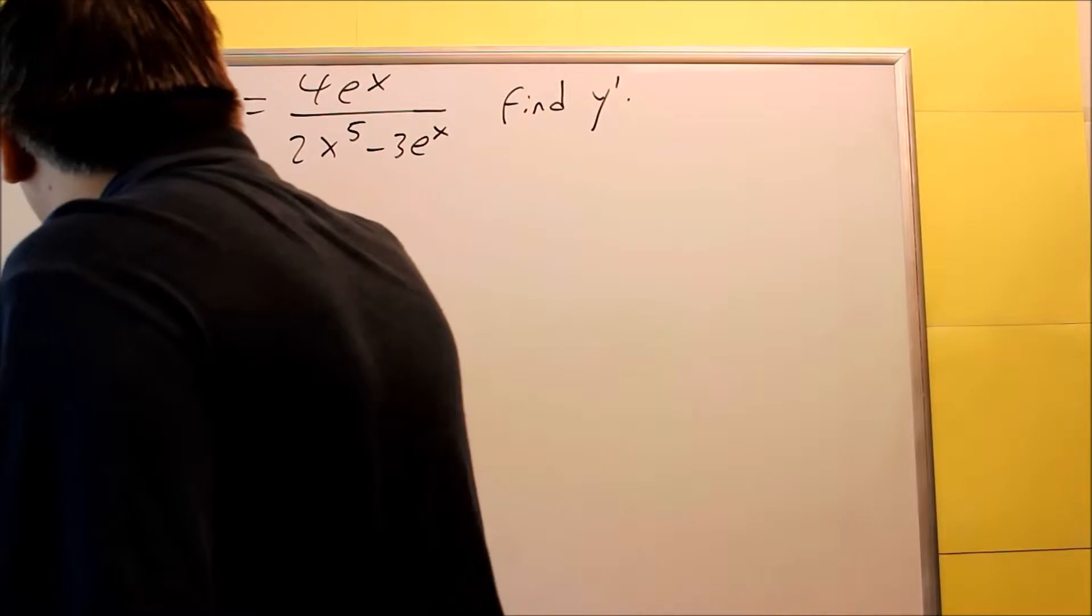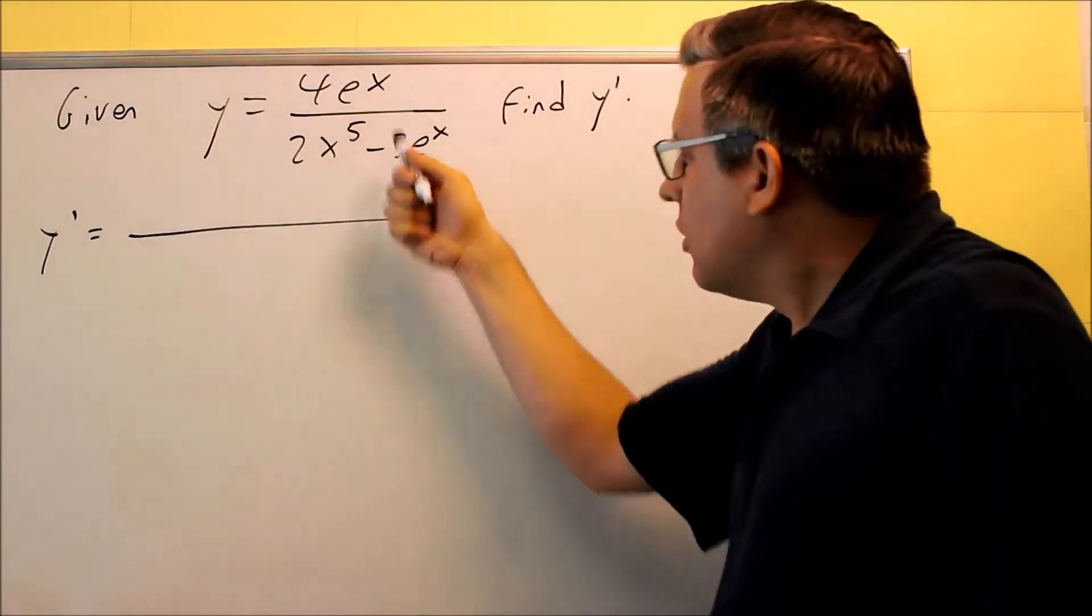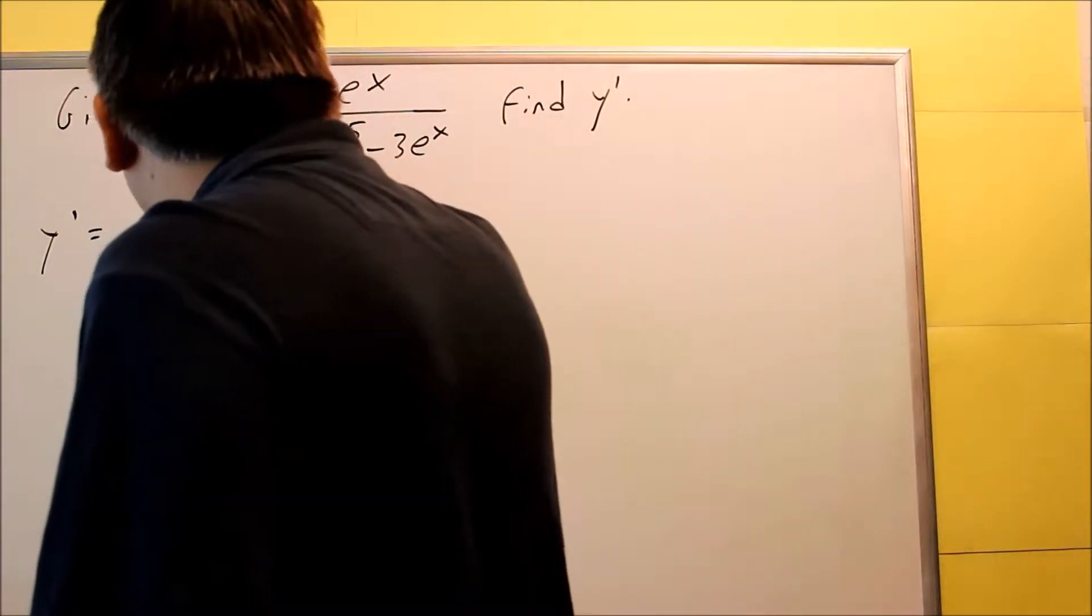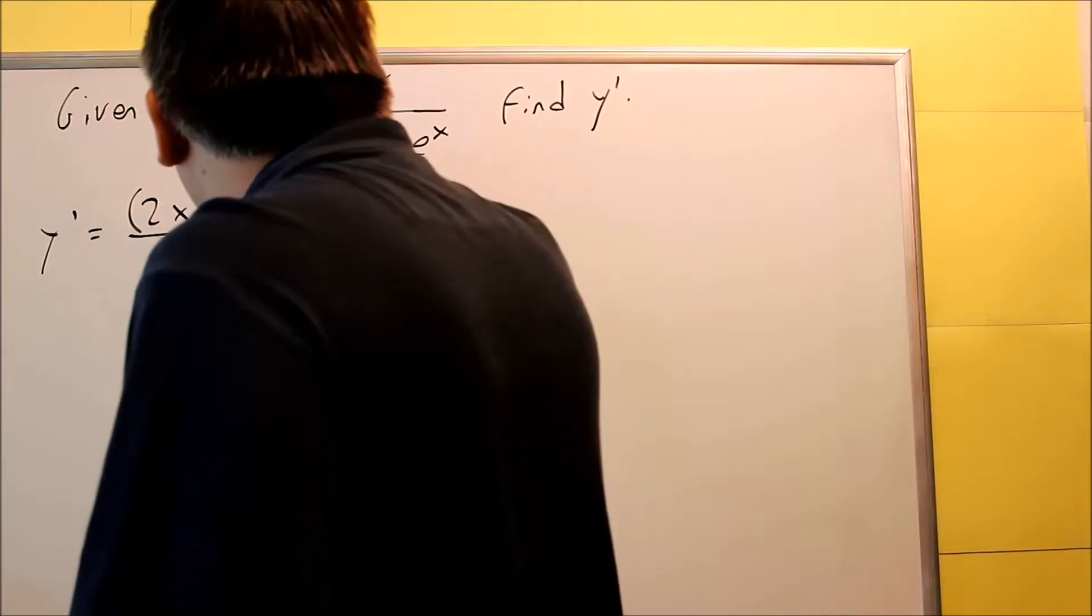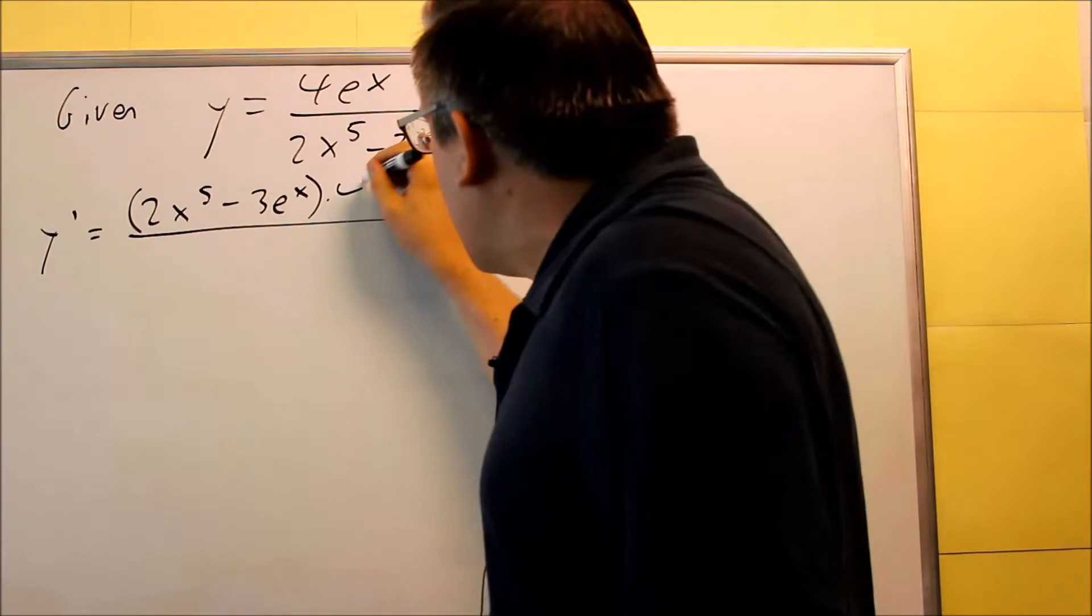We're going to first, the way the quotient rule works is you have to take the bottom one times the derivative of the top. So bottom is 2x to the fifth minus 3e to the x. All that's going to be multiplied by the derivative of the top.